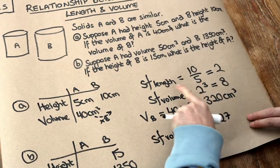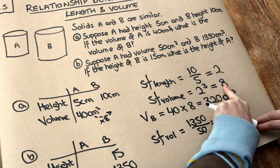So the volume of B is 27 times bigger than A. Now, thinking backwards, to go from the scale factor of length to the scale factor of volume, we cubed this number, didn't we?